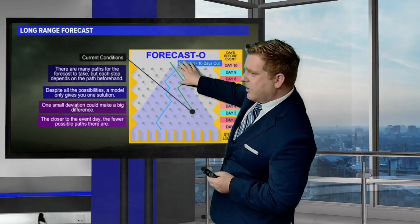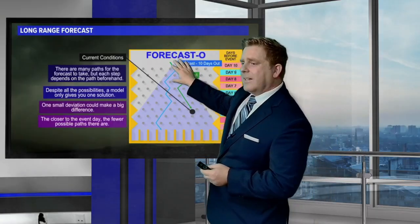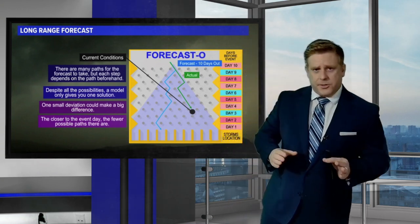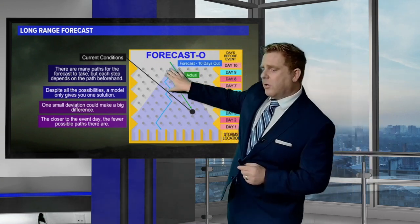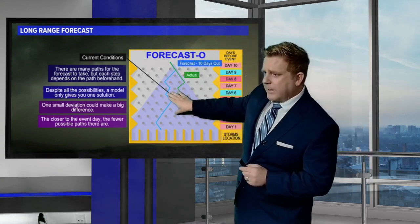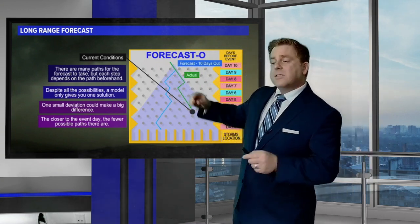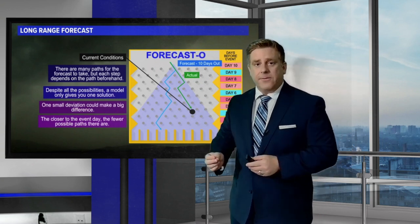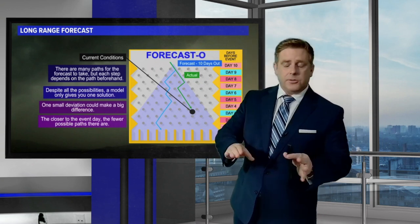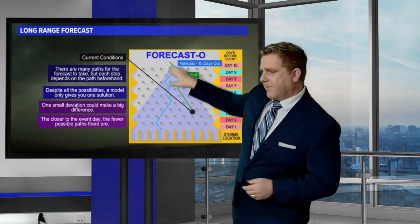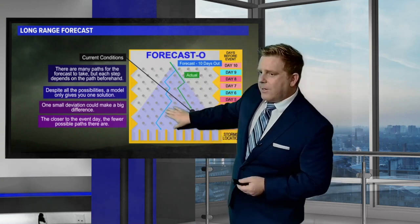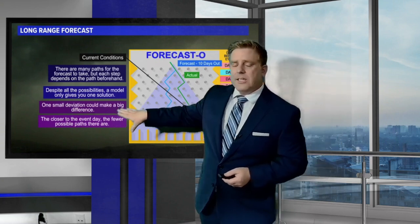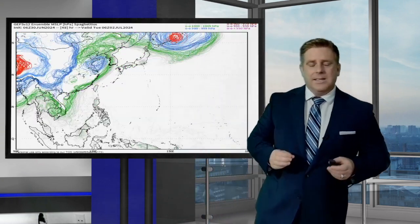So that initializing data gets plugged into our supercomputer. And as you start to go through the long-range forecast, sometimes those variables can slightly differ. The model changes things slightly differently as well, and the further out you go, one small deviation makes a big difference.